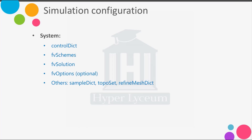If you need to specify a source term or porosity, you can use fvOptions. In fvOptions, we have different models — for example, for porosity we can use the Darcy-Forchheimer model and introduce its coefficients, or if we have a source term, we can also use fvOptions. Other utilities like sampleDict, topoSet, and refineMeshDict will be discussed more in the future, but it is important to note that we put these files in the system directory.